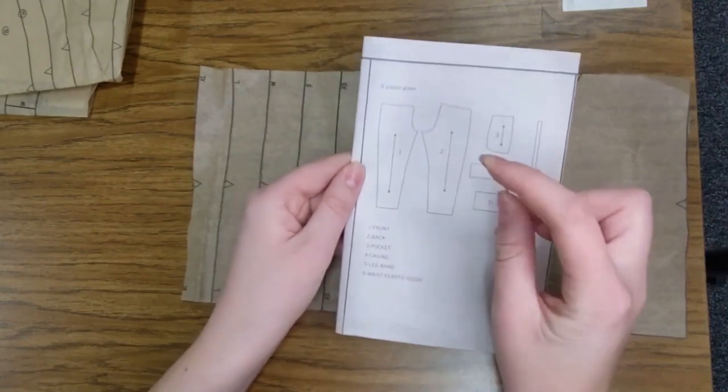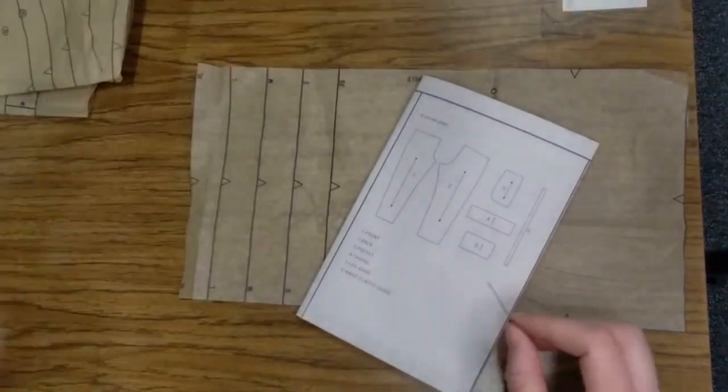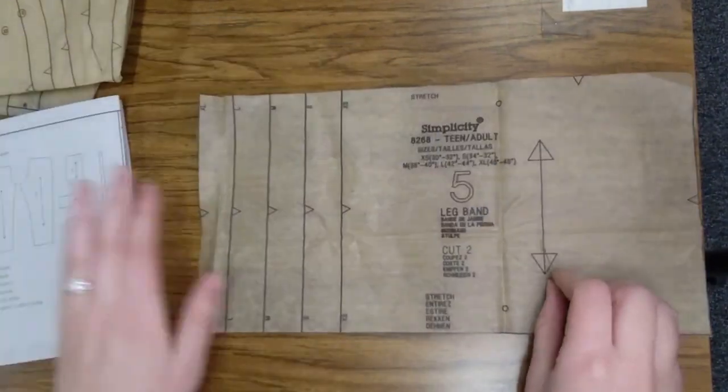So what you're going to do now is find your size, which we already did, right? You find that size, and you're going to cut out that size of your pattern tissue.